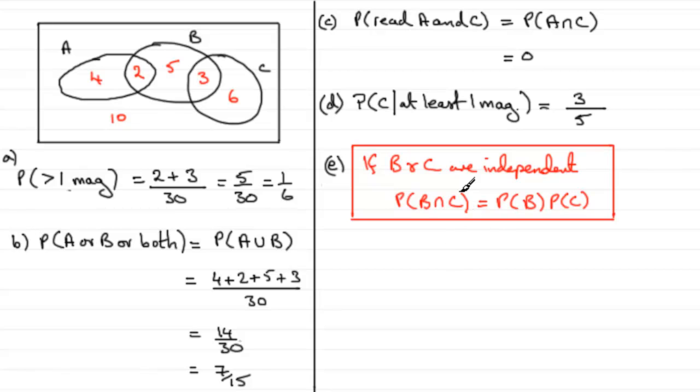So what I'm going to do is, first of all, work out what the probability of B intersection C is. I'm not going to assume that it's the probability of B times the probability of C. I'm just going to look at the Venn diagram and see what we've got. Now, B intersected with C is this three. So we've got three out of all of the students, which is thirty. Three thirtieths. In other words, one tenth.